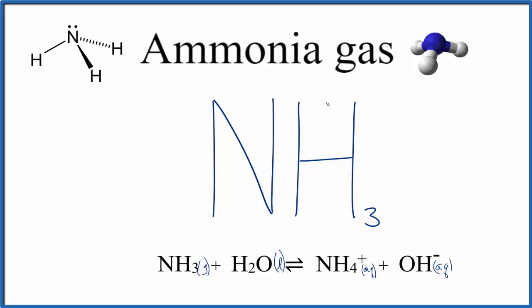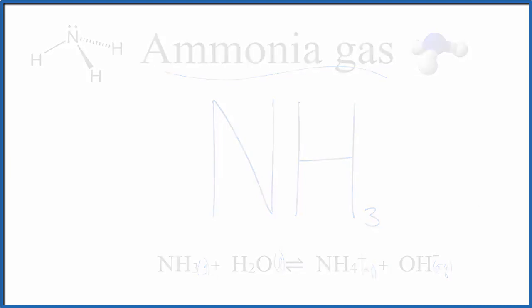So the formula for ammonia gas is NH3. If you had liquid ammonia as well, that would also be NH3 — if you cooled it down and put it under pressure, you could change the gas to just liquid NH3. But when we put it in water, we get this equilibrium between the ammonia and the water, and the ammonium ion and the hydroxide ion. This is Dr. B with the formula for ammonia gas. Thanks for watching — I'll see you in the next video.